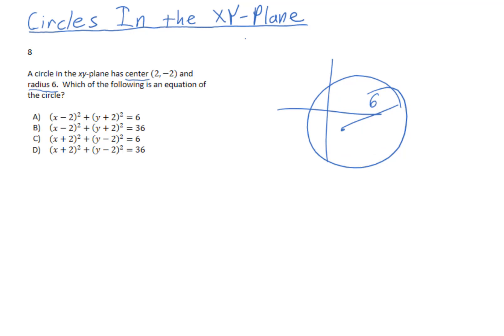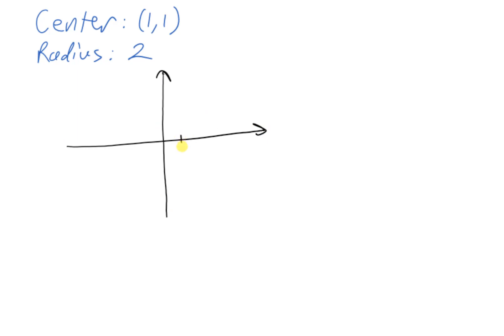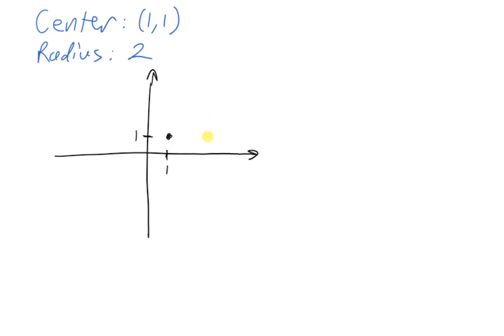Let's think about how we might do that by starting with a really simple example. Suppose I'm dealing with a circle that has a center at (1, 1) and a radius of just 2. If I were to sketch this circle on the xy-plane, it would have a center at the point (1, 1), and with radius length 2, I could roughly sketch it out.